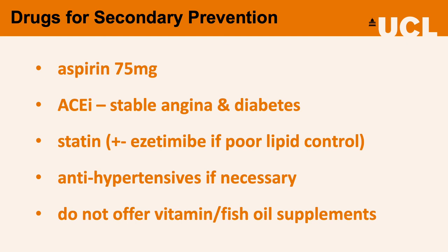It's also important to reduce the risk of acute coronary syndrome developing, so think about drugs for secondary prevention of coronary events. This includes consideration of aspirin 75 milligrams once a day, the use of an ACE inhibitor in patients who have stable angina and diabetes, a statin plus or minus ezetimibe if there is poor lipid control, antihypertensives if necessary, and as a matter of routine we should not be offering vitamin or fish oil supplements as there is no evidence of benefit.